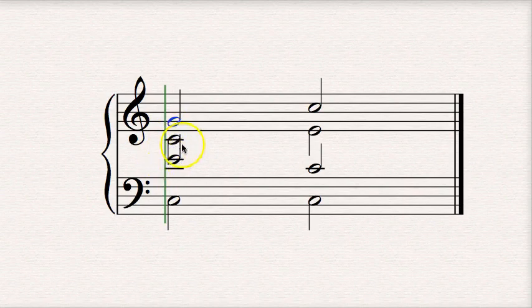So in terms of voice crossing, you'll notice this looks kind of funny here. The stems are going the wrong direction, because the tenor is actually higher, because it's E4, than the alto, which is a C4.